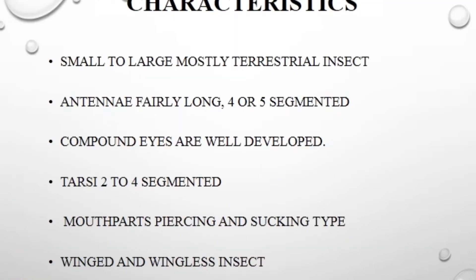The general characteristics of insects belonging to order Hemiptera are: the size of the insect is 0.2 to 0.7 inches in length. They are mostly found in terrestrial areas. The compound eyes are well developed, and the mouthpart is of the piercing and sucking type. The antenna is long and has 4 to 5 segments.